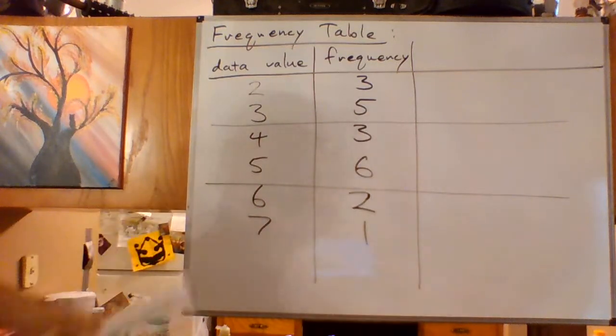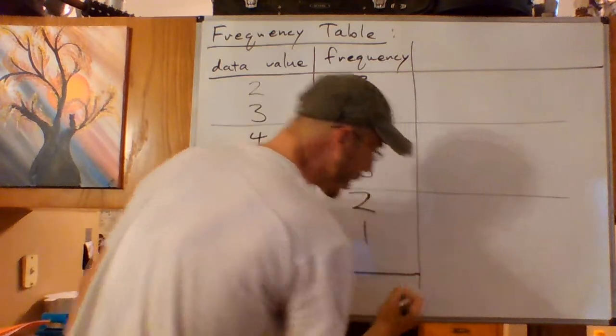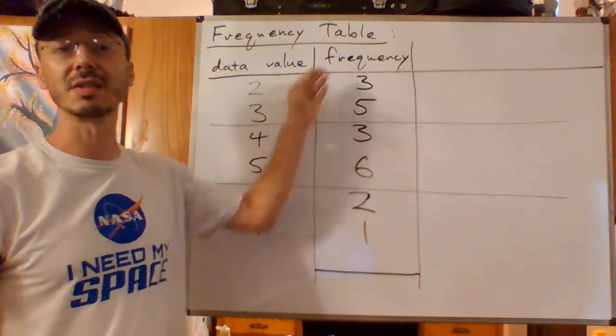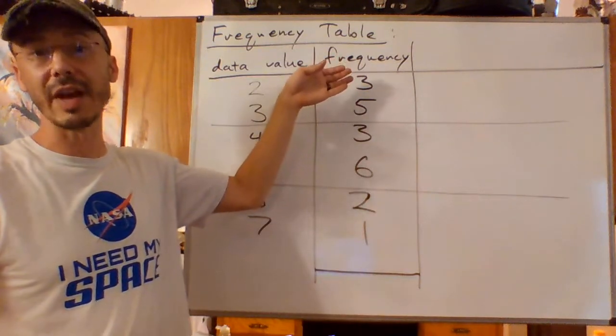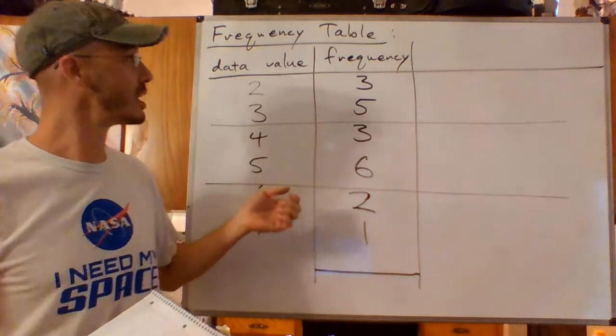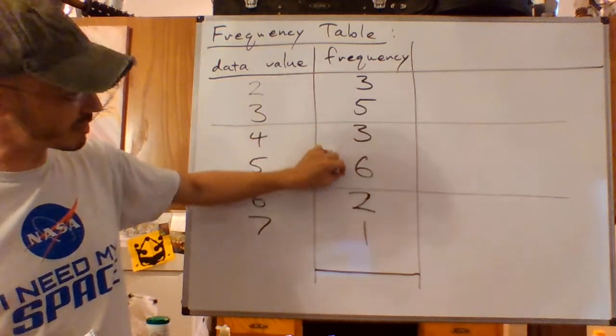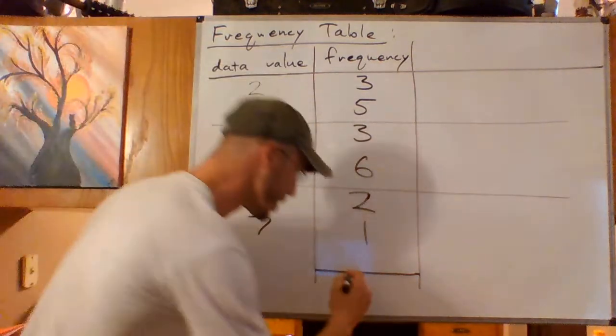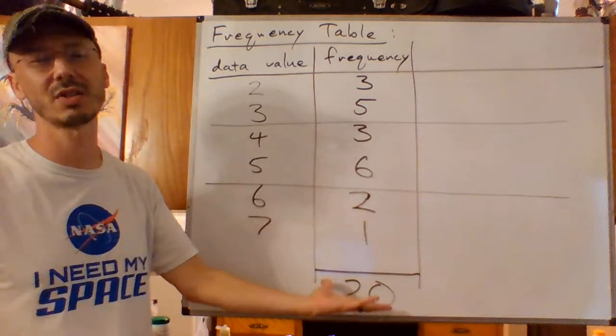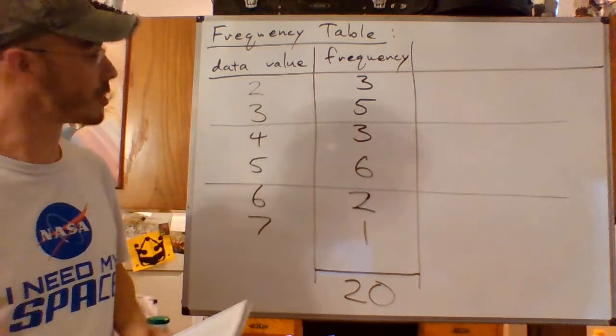And that's the frequency table. Now I want to show you something that we can do with the frequency table before we move on. I can add up the frequencies. The sum or the result of adding up all the different frequencies should give me the total number of data values, and it does. Eight plus three is eleven, six is seventeen, plus two is nineteen, plus one is twenty. Remember there were 20 data values to begin with, so the sum of the frequency is just kind of a check.